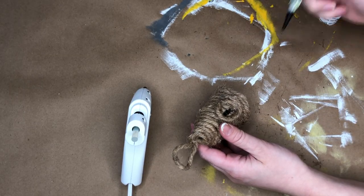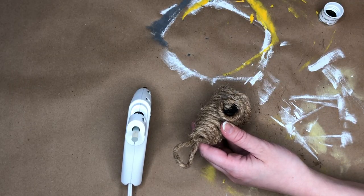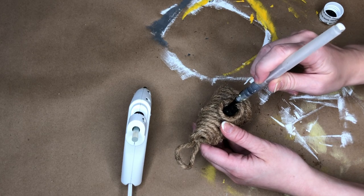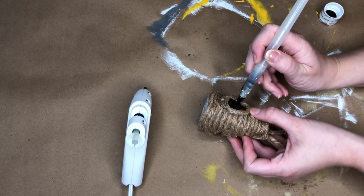Then I took a paintbrush and a bit of black paint and just painted the inside of our beehive entrance to add a bit of depth to it.